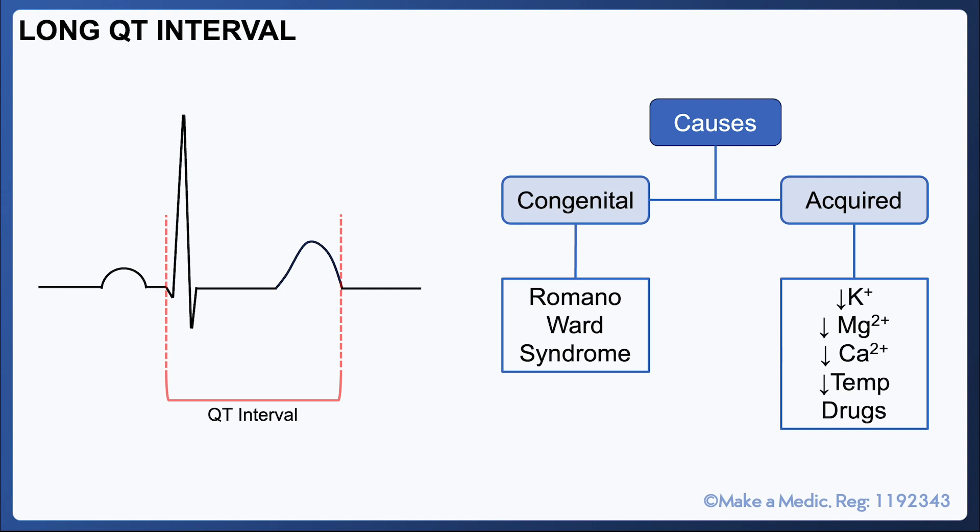Acquired causes of long QT syndrome include hypokalemia, hypomagnesemia, hypocalcemia and hypothermia. There are also various medications that are known to prolong the QT interval such as citalopram.